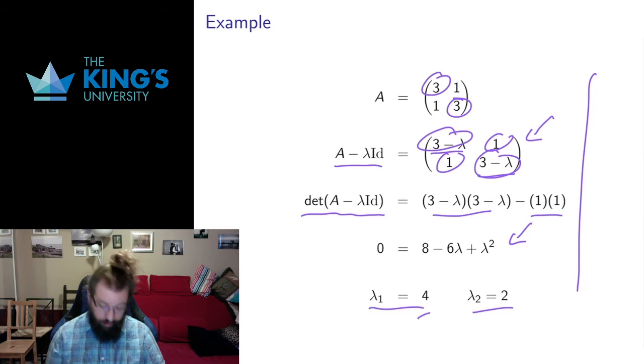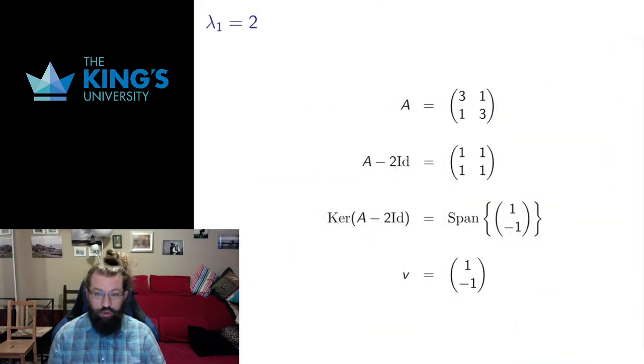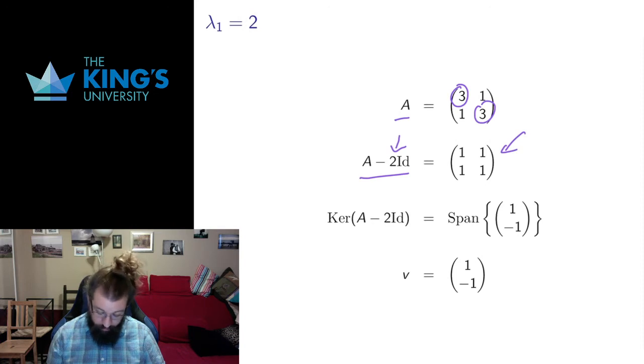Then for each of these, I'm going to calculate the kernel of A minus lambda identity using these two eigenvalues. Let me start with λ₁ = 2. So here's A again. Here's A minus 2 identity. So now I've actually replaced the unknown lambda with a specific eigenvalue 2. Subtract 2 there, subtract 2 there gives me 1 in both instances. So I get the matrix 1, 1, 1, 1. And I calculate the kernel of that matrix.